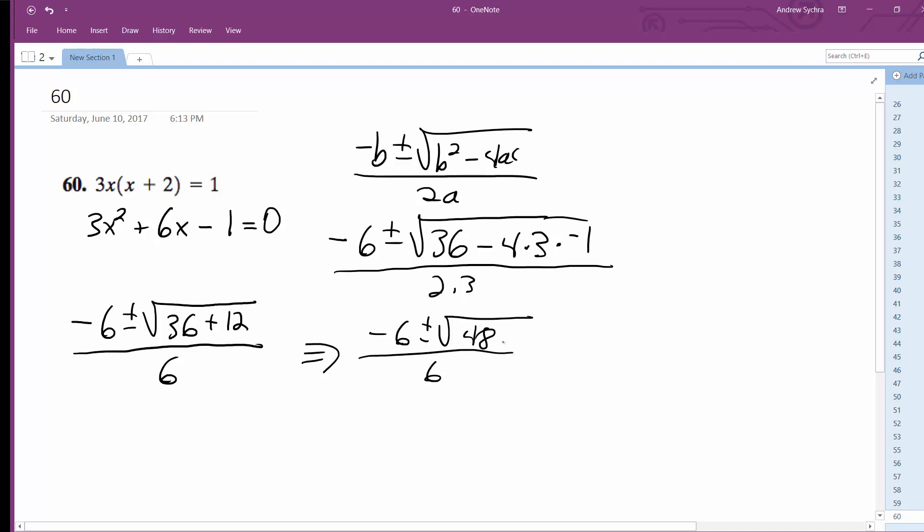You can break down 48 into 16 times 3, and then you can pull a 16 out, which becomes 4. So this becomes -6 ± 4√3 all over 6.